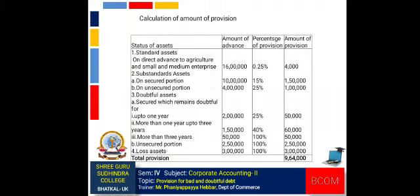(B) on unsecured portion: amount of advance Rs. 2,50,000, percentage of provision 100%, amount of provision Rs. 2,50,000. Fourth, loss assets: amount of advance Rs. 3 lakh, percentage of provision 100%, amount of provision Rs. 3 lakh. The total amount of provision is Rs. 9,64,000. Thank you.